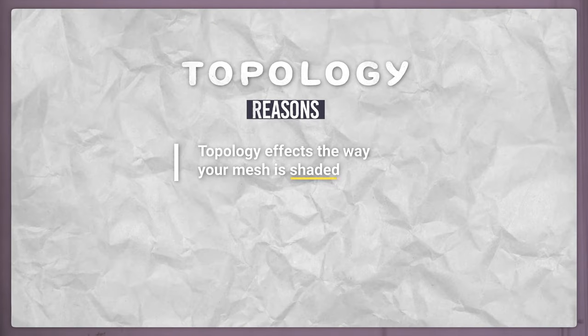Now we know what topology is and we know what retopology is, but what is good topology? To answer this, we have to break it into two categories: what is technically good, and what is artistically good. For the artistic aspect, it's making sure that the silhouette and shape of your model is accurately represented and looks good. When planning out good topology, there are three major things to keep in mind.